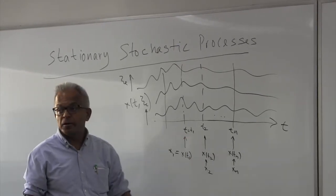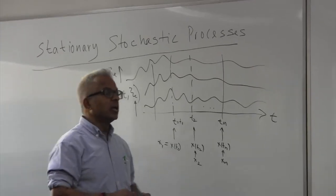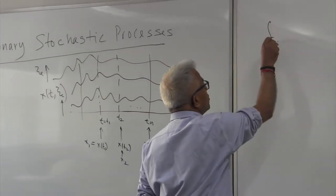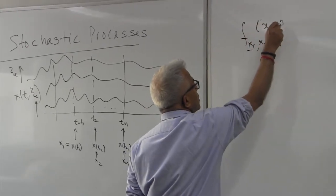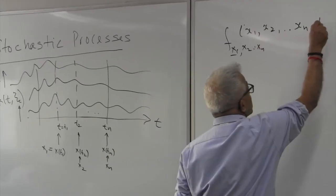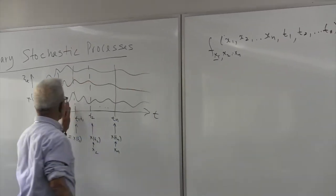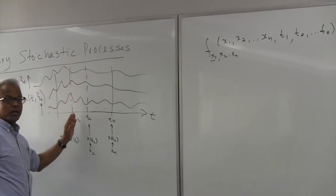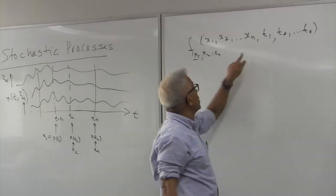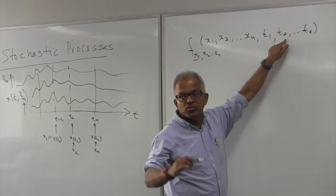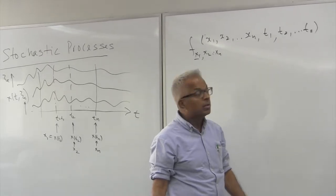In the extreme case it could be independent also — these are all possibilities. If you have n random variables, you could think of their joint density function. One way to characterize them would be to look at their joint density function. If I change t1 to somewhere else I am going to get a completely different random variable, so the time instance matters: if you change the time you are going to get a different random variable and possibly different behavior.